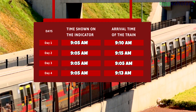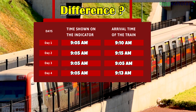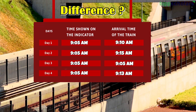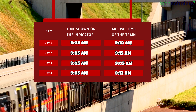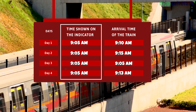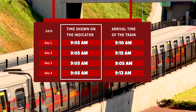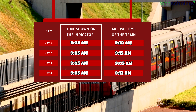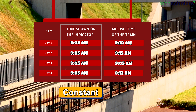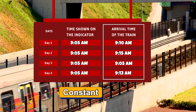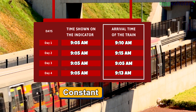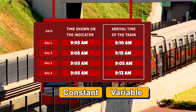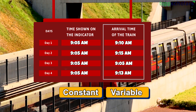One simple question: tell me the difference between the timing shown on the indicator and the arrival time of the train. The timings on the indicator are the same on each consecutive day — that is the reason we call it a constant. Whereas the arrival time of the train is different, it is changing with time — that is the reason we call it a variable.